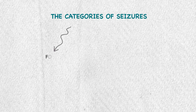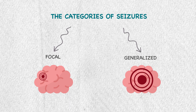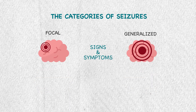Before talking about the pathophysiology, let's talk about the categories of seizures. We have focal or generalized seizures based on where they start in the brain. Focal seizures affect one area of the brain, while generalized seizures start over both sides, or start as focal then become generalized.